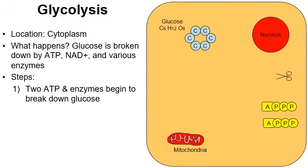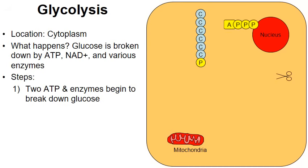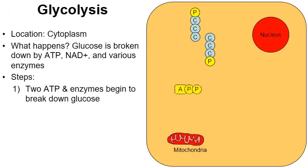You have to spend a little ATP to make a lot of ATP — it's worth it. A molecule of ATP plus an enzyme begins to break down glucose into an intermediate molecule. Then another molecule of ATP and a different enzyme break that intermediate down into two molecules labeled PGAL, or phosphoglyceraldehyde. PGAL is another intermediate that will be broken down further.